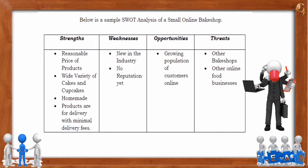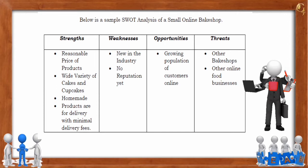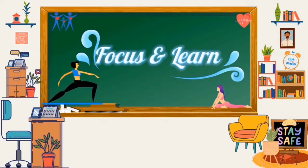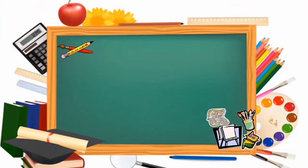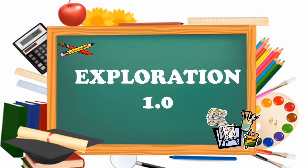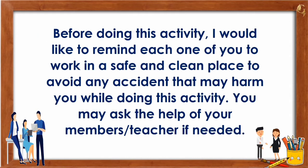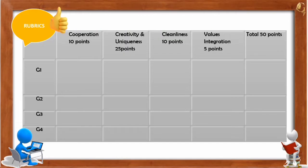Observe the sample SWOT analysis of a small online bake shop — as you can see, it emphasizes strengths, weaknesses, opportunities, and threats. The following activities are in the form of group work; each member of the group should participate and cooperate. You will do the assigned tasks provided with a rubric. I would like to remind each one of you to work in a safe and clean place to avoid any accident while doing this activity. You may ask the help of your members or teacher if needed. You are guided with rubrics.